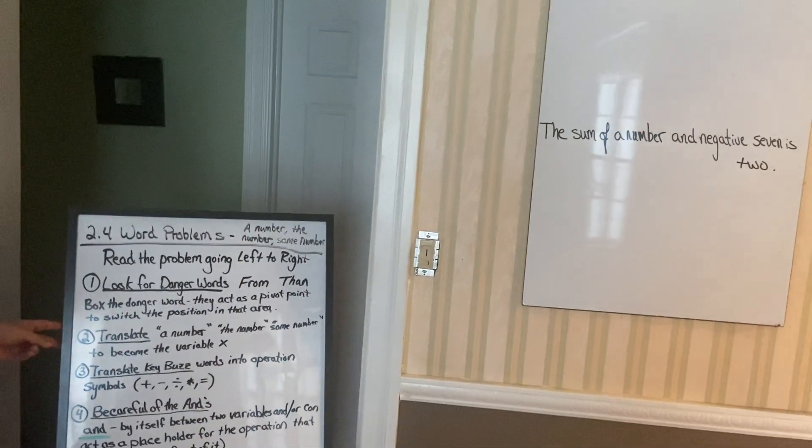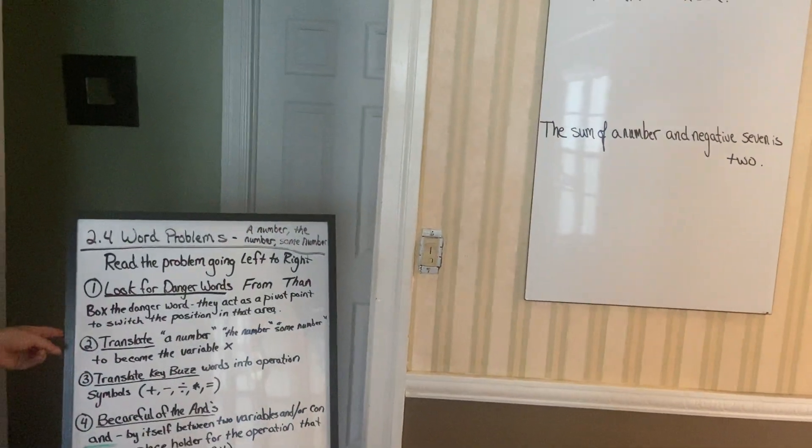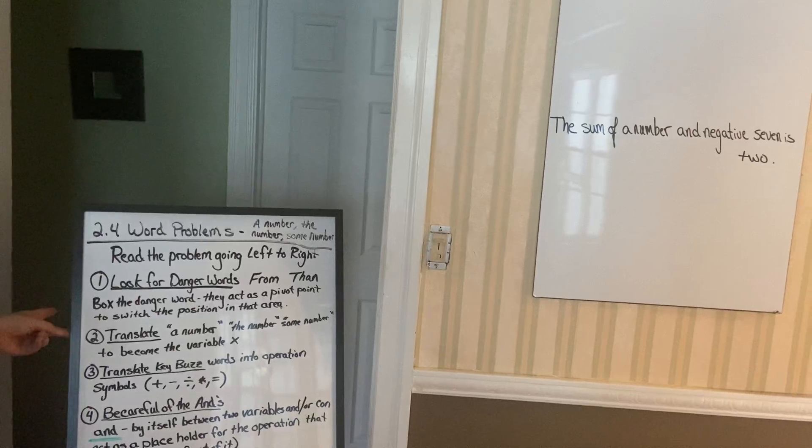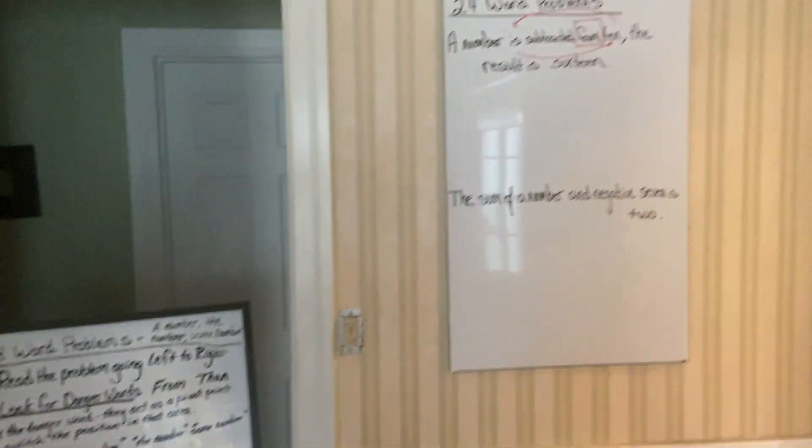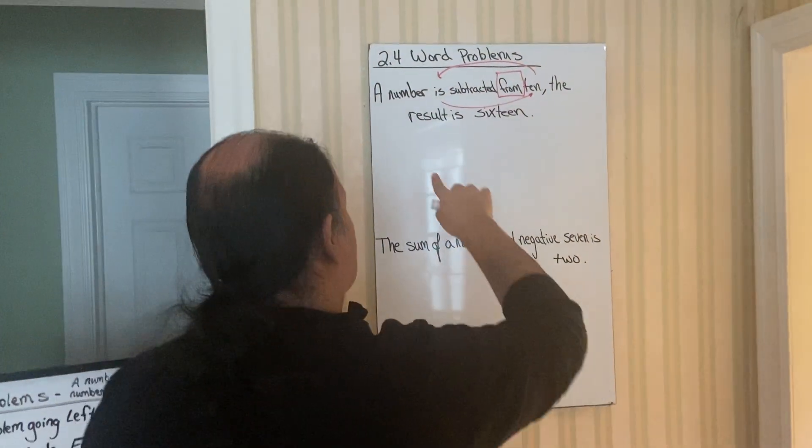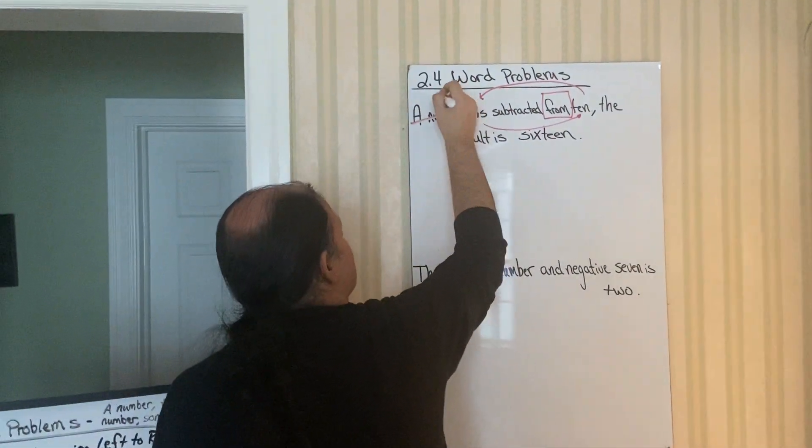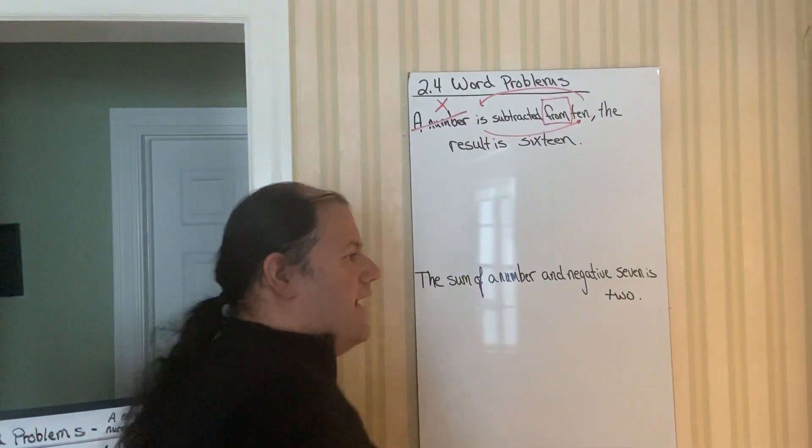Next step, translate anything that says a number, the number, some number, cross it out, use the variable x. So here's the word a number. Let's cross it out and make it the variable x.